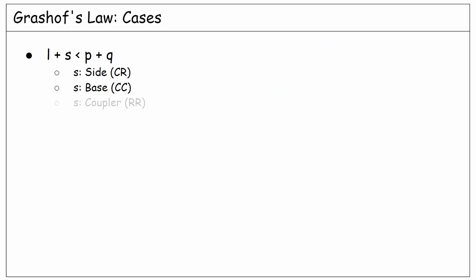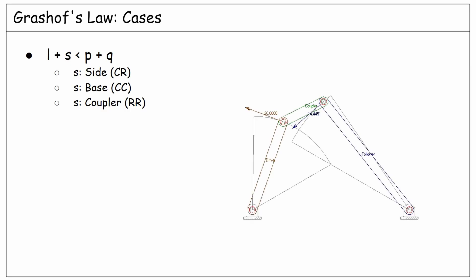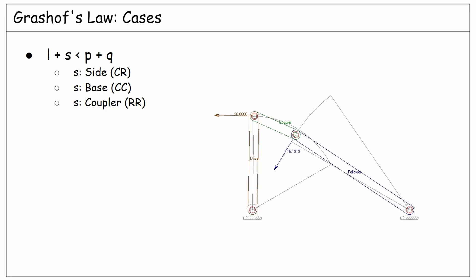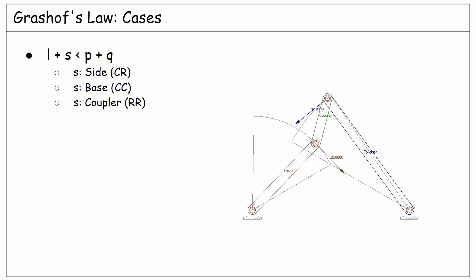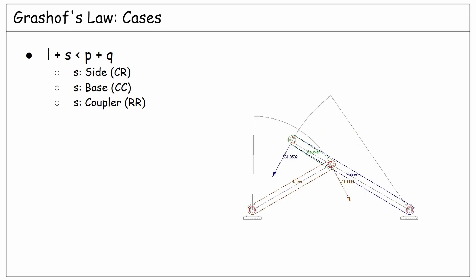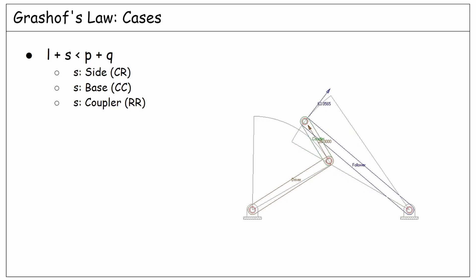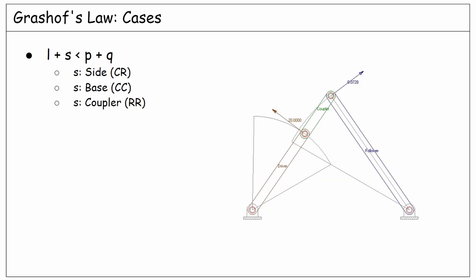The last subcase says if the shortest link is the coupler, then we will have a rocker-rocker motion. As you see in this example, the driver has two deadpoints, which happen when the coupler and the follower links become aligned. The follower also oscillates like a rocker link in a range of angles with two endpoints. One of the endpoints happens when the driver and the coupler links are aligned.